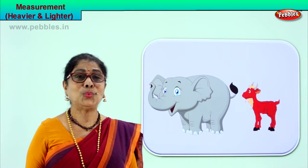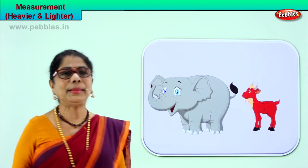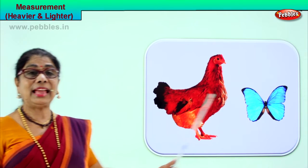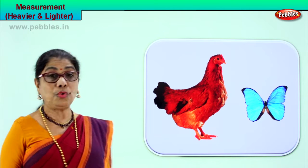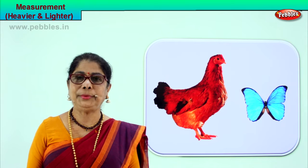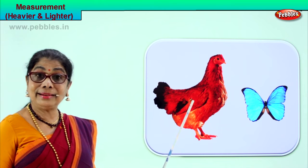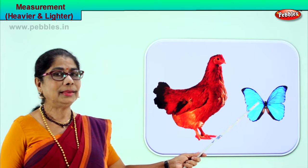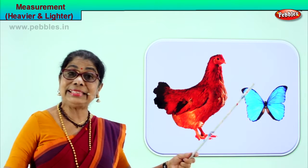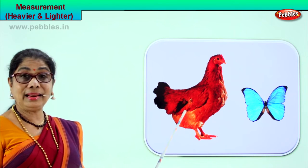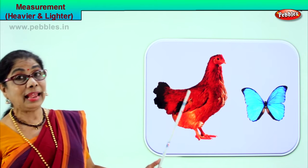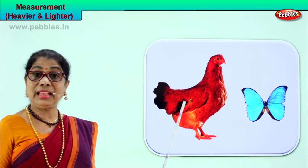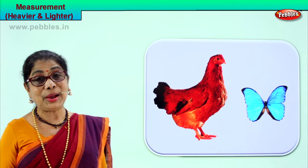I'm sure now you understood what is heavier and lighter. Let's go to another picture. We have a butterfly and a little red hen. Put them on a weighing machine — you will find the little red hen is very heavy and the butterfly is hardly any weight. So the butterfly is lighter than the little red hen, and the little red hen is heavier than the butterfly.